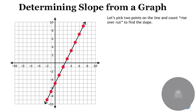I want to cover this because I think it's an overlooked skill: you can determine the slope from a graph by simply counting rise over run. I'm going to pick two points on the line and count rise over run. Starting with green — suppose I pick these two points. To get from the point on the left to the other, the rise is two and the run is one. Therefore, the rise over run is two.